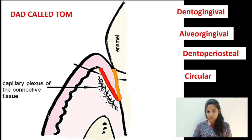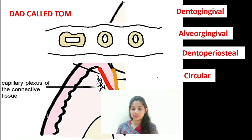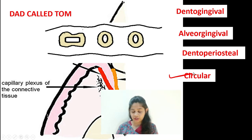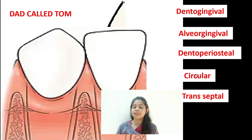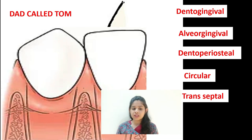The next group is the circular fibers, which surround the teeth in a ring or cuff-like fashion, coursing through the marginal gingiva and the attached gingiva. Next are the transeptal fibers, which are present in the interdental region — this is one bundle of fibers shared with both gingival fibers and periodontal ligament fibers. The transeptal group connects the cementum of one tooth to the cementum of the neighboring tooth in the interproximal area.